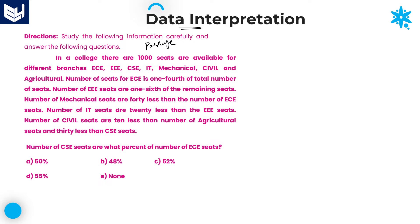Here the information given in this passage is: in a college there are 1000 seats available for different branches — ECE, EEE, CSE, IT, Mechanical, Civil, and Agriculture. Total we are having seven branches and the total number of seats available are 1000. That is the information about it.